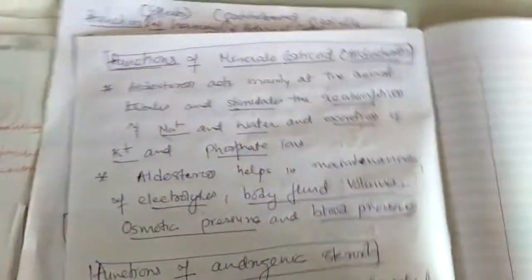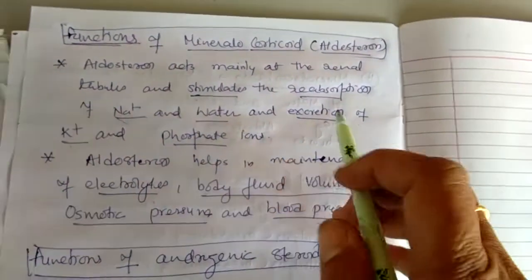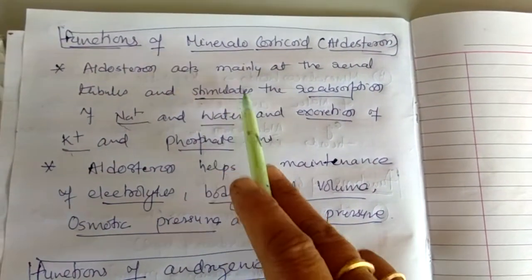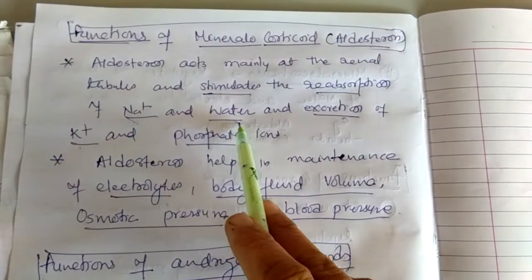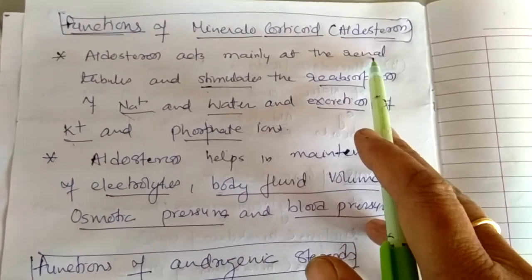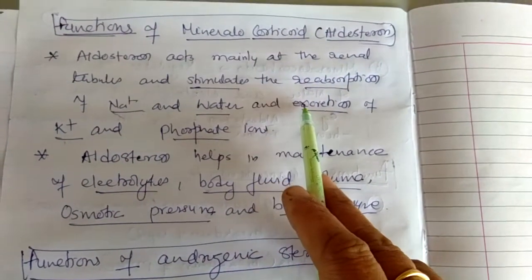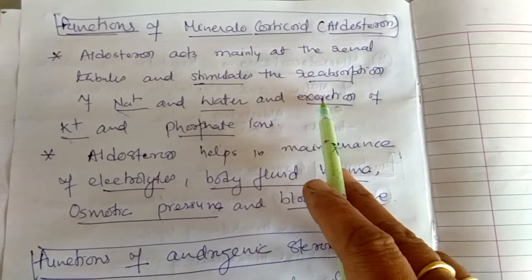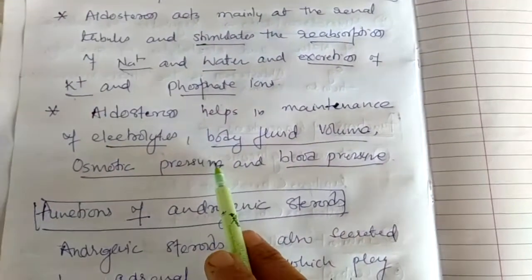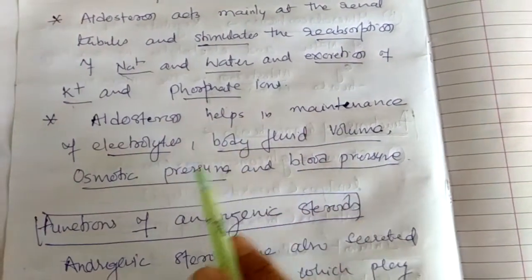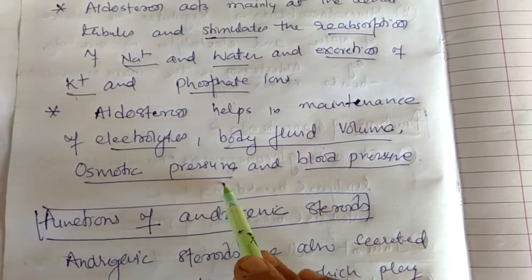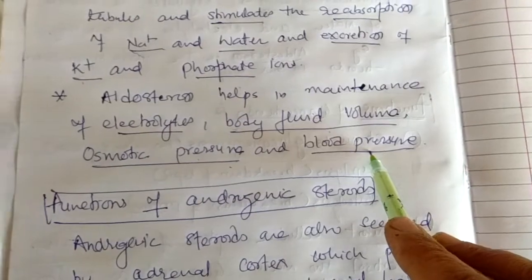Now we are coming to the functions of mineralocorticoids, which is also called aldosterone. Aldosterone stimulates the reabsorption of sodium and water and the excretion of potassium and phosphate by the renal tubule — a function we have already discussed when we covered the excretory system. Aldosterone also helps in the maintenance of electrolytes, body fluid volume, osmotic pressure, and blood pressure.